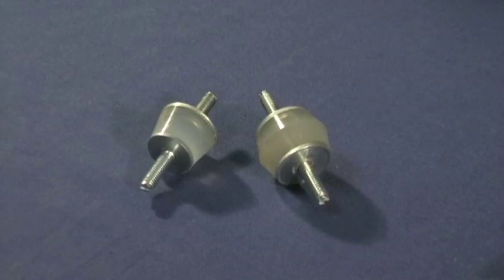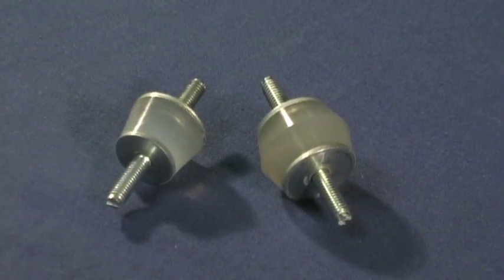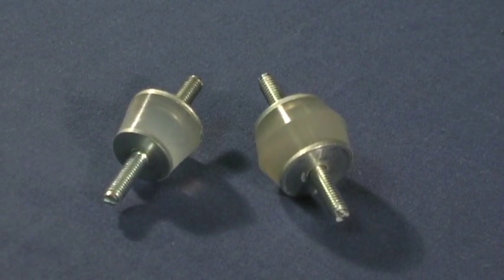The particular isolators used here are the double studded mounts, which come in two different configurations: the conical shaped ones and the cylindrical shaped version. The difference between them are the loads they can handle.